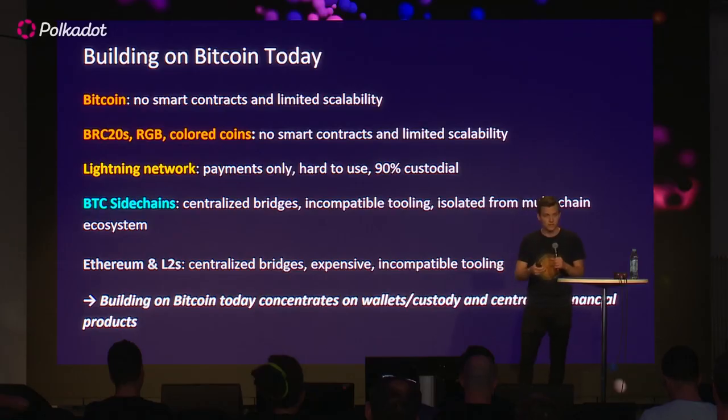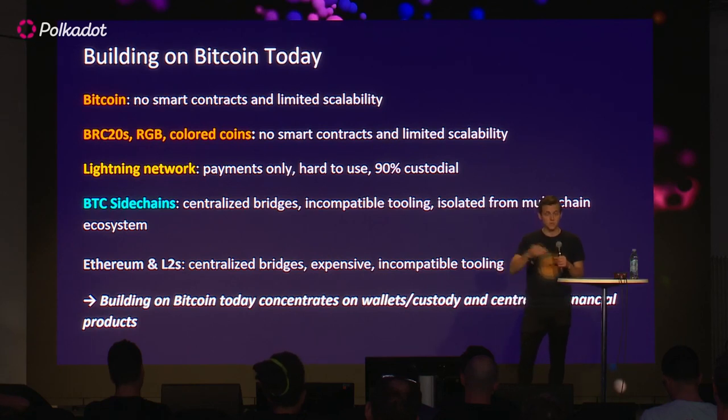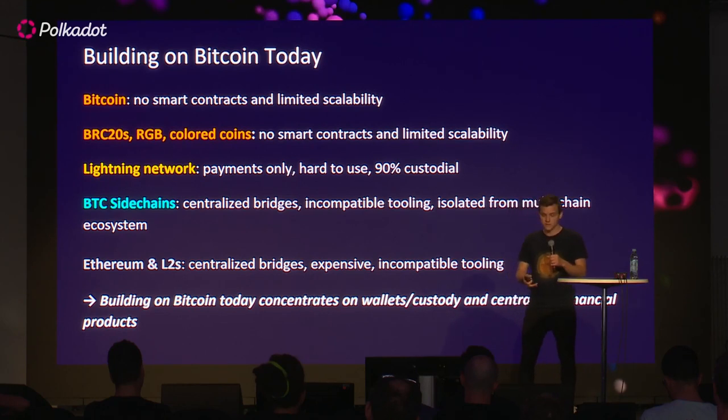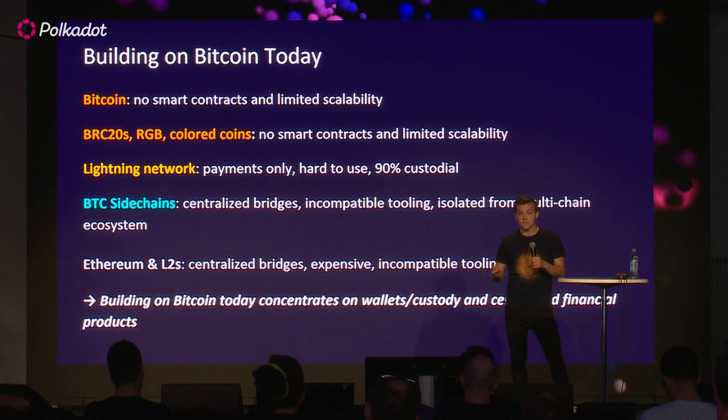What has emerged over the last few years are so-called sidechains — Bitcoin-focused blockchains that try to connect to Bitcoin and extend its functionality by adding smart contracts. But all of these sidechain projects today rely on centralized bridges. To bridge between Bitcoin and the sidechain, you trust a third-party centralized service, which defeats the purpose. The tooling is not compatible — you have to use Ethereum libraries and rewrite tooling you'd normally expect to use on Bitcoin.